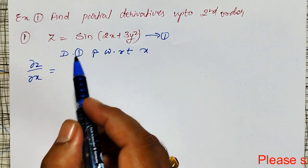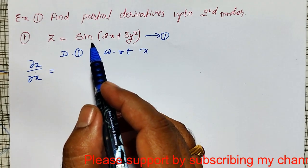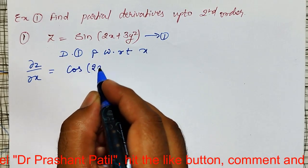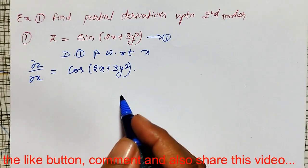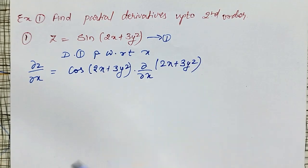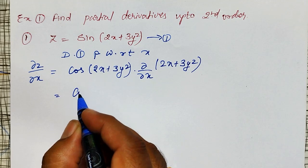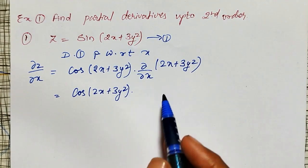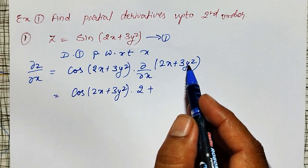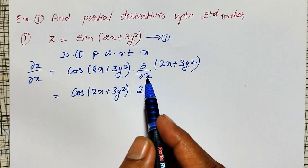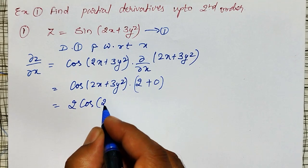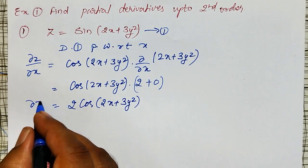Differentiating partially with respect to x, I am getting ∂z/∂x. While differentiating partially with respect to x, I have to keep y constant. This is a composite function type — I will treat the argument as x, so differential of sin is cos of (2x + 3y²), then I differentiate 2x + 3y² partially with respect to x. The partial derivative of 2x is 2, and partial derivative of 3y² is zero. So ∂z/∂x = 2cos(2x + 3y²).